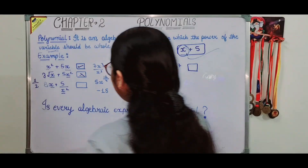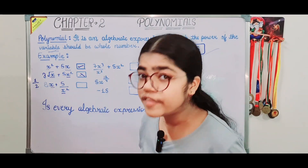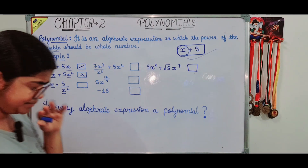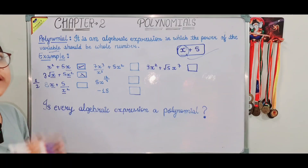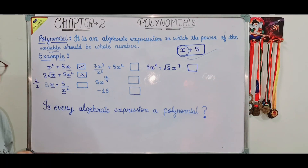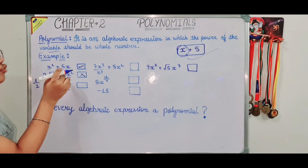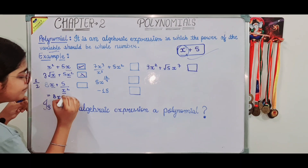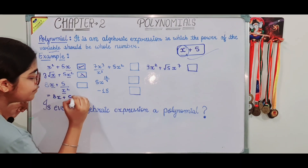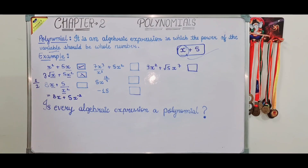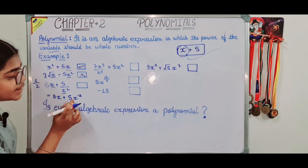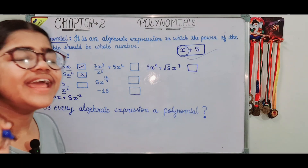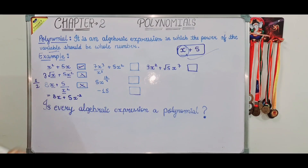Now the third example involves 1 over x squared. When we move x squared to the denominator, the power becomes negative. Since negative power is not a whole number, this expression is not a polynomial.